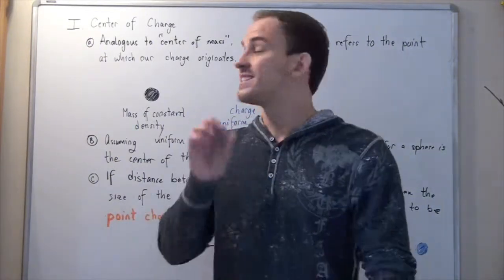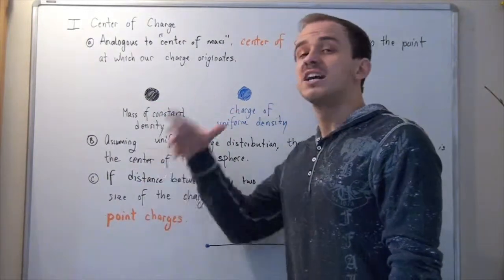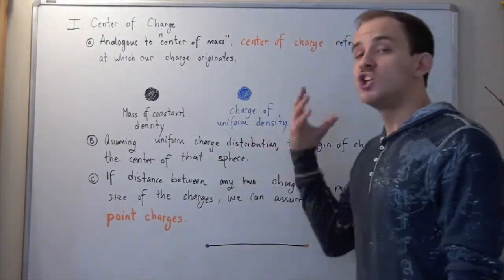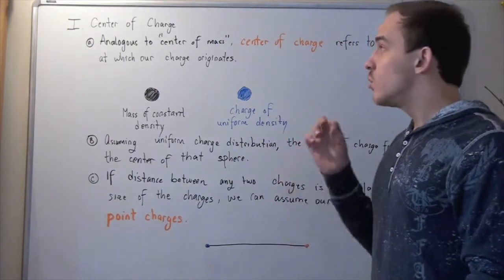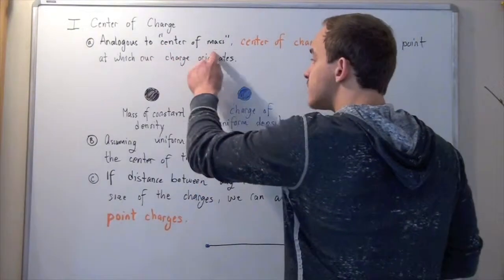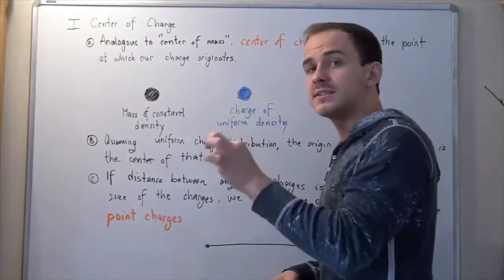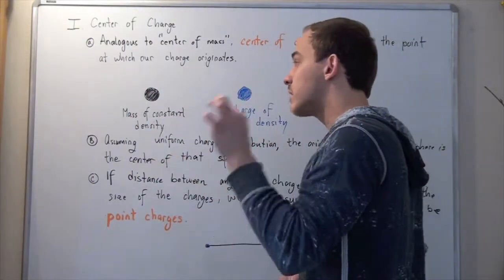So, if we look at two spheres, one with constant or uniform mass density, and a second one with uniform charge density, we see that our center of mass for this sphere is the point smack in the middle. It's the center of our circle, of our sphere.